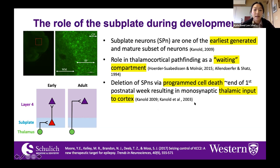Subplate neurons undergo programmed cell death toward the end of the first postnatal week, sometimes the beginning of the second postnatal week, depending on the birth date of those neurons. This results in the more monosynaptic thalamic input to the cortex that we know is present in adults.